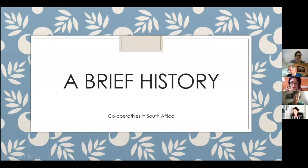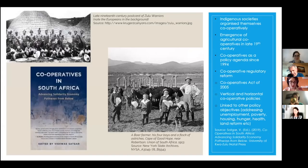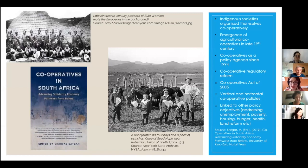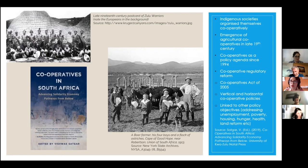I'm going to whiz through a very brief history of cooperatives in South Africa. Cooperatives have been around informally for a very long time in South Africa and across the African continent — this is the general way that indigenous societies have organized themselves. In the late 1900s we saw the emergence of more formalized cooperatives, which were mainly agricultural and involved the Boers. Cooperatives emerged as a policy agenda only in 1994, post South Africa's liberation, including the Cooperatives Act of 2005.